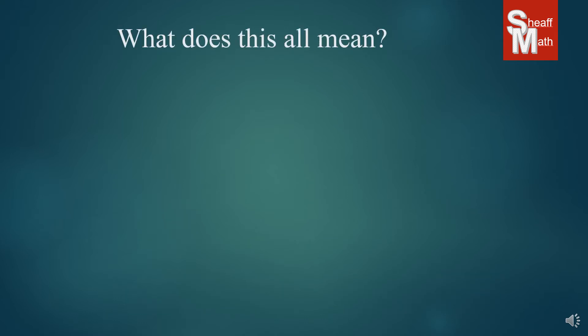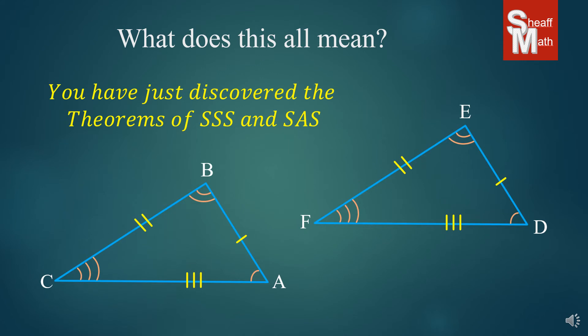Now, what does this all mean? You've just discovered the theorems of SSS and SAS. And although two congruent triangles have the same congruent corresponding parts, like angles and sides, all you really need to prove that they're congruent is that all three sides are congruent. We don't need the angles in this case. That's the side-side-side. And then, also, if you were just given two sides that were congruent and the angle in between them, that is enough information to prove that these are congruent, called the side-angle-side theorem.